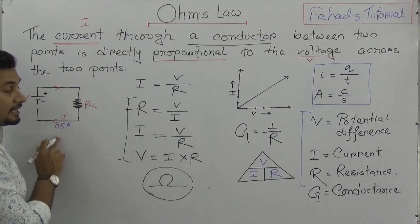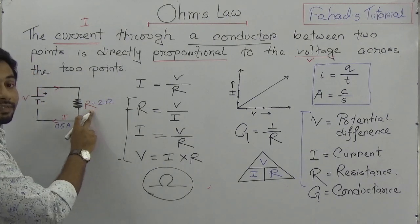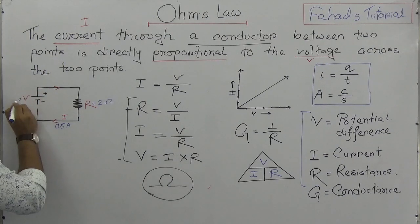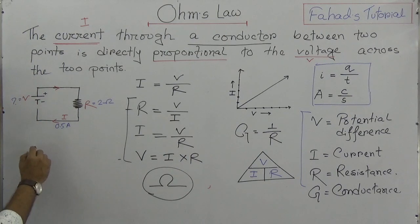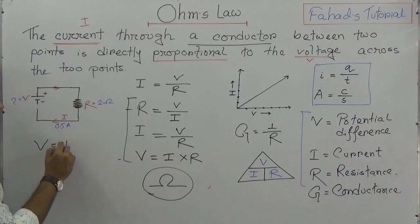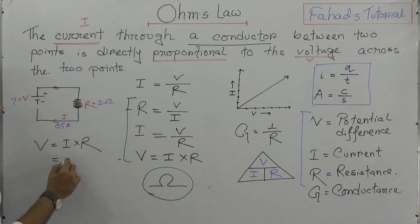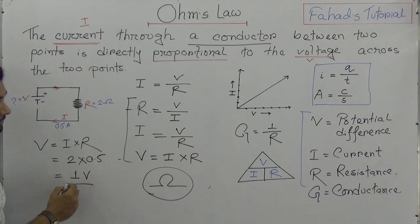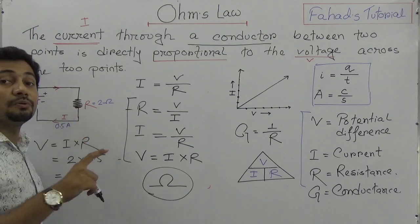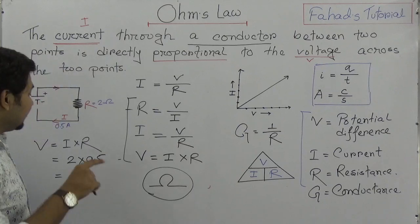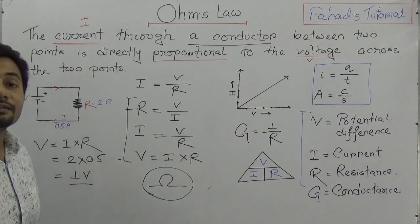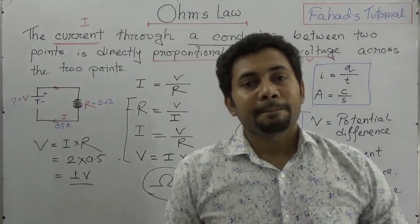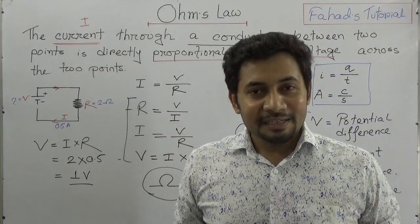Now, what should be the voltage applied in the circuit? We need the value of V, and we know V equals I times R. So simply 2 times 0.5 gives 1 volt. So if in a circuit a 2 ohm resistance is applied and we want 0.5 ampere current, we need to add 1 volt potential difference.